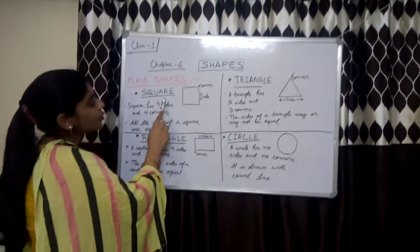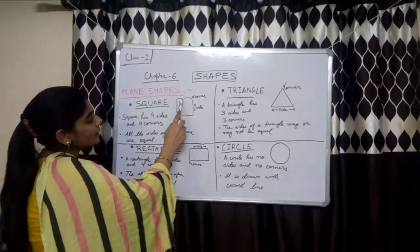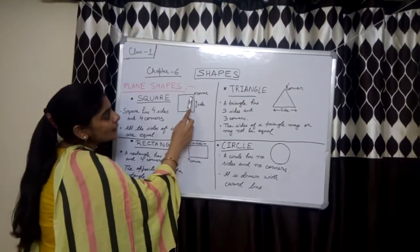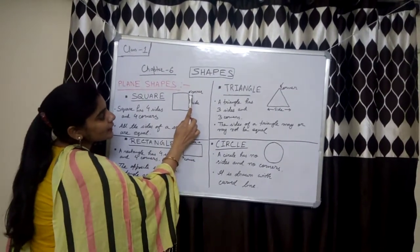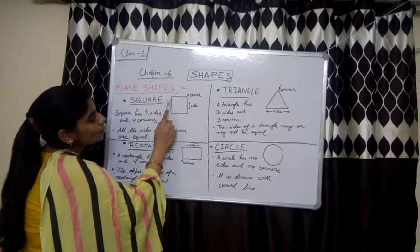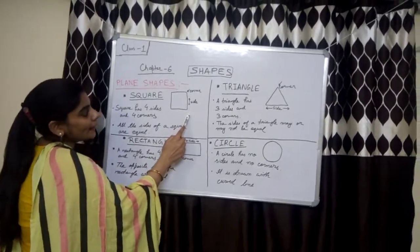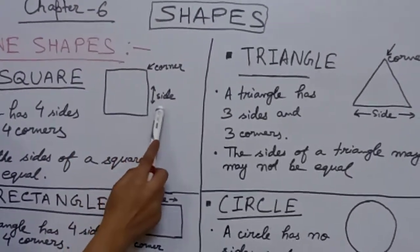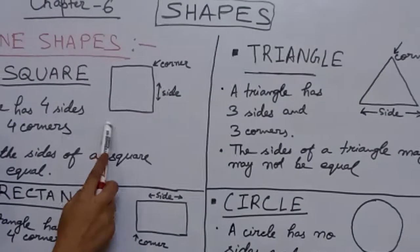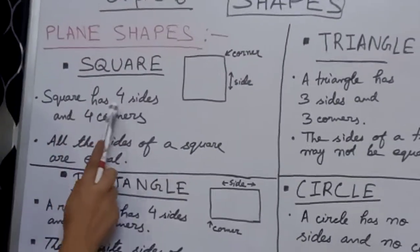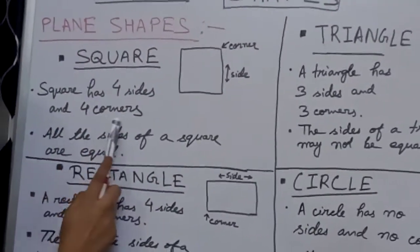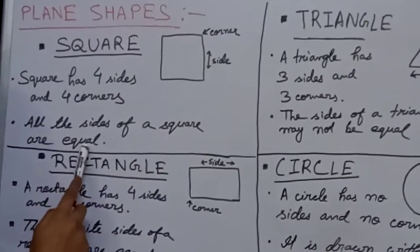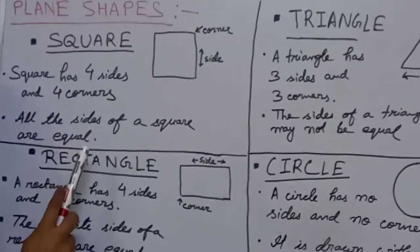Now, what is a square? A square is made up of four sides and four corners. You can see in this figure — one, two, three, four corners, and one, two, three, four sides. Square has four sides and four corners, and all the sides of a square are equal.